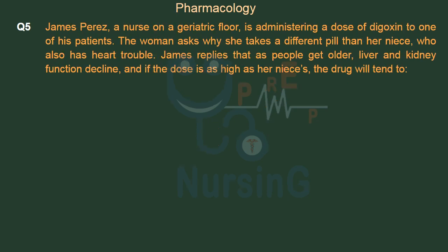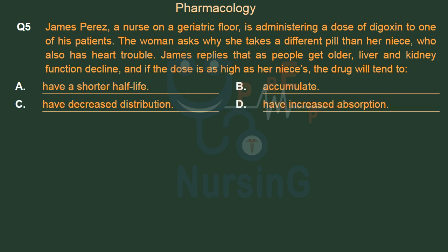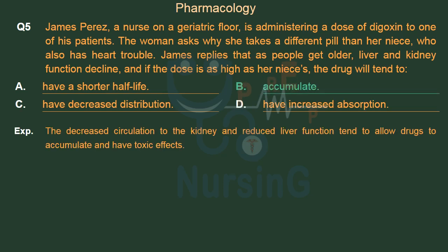James Perez, a nurse on a geriatric floor, is administering a dose of digoxin to one of his patients. The woman asks why she takes a different pill than her niece, who also has heart trouble. James replies that as people get older, liver and kidney function decline, and if the dose were as high as her niece's, the drug will tend to accumulate. The right answer is: accumulate. The decreased circulation to the kidney and reduced liver function tend to allow drugs to accumulate and have toxic effects.